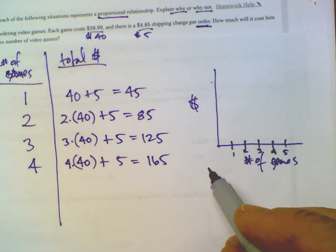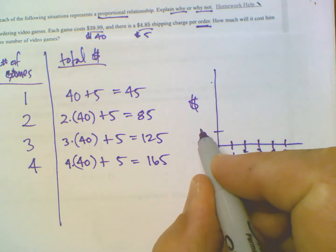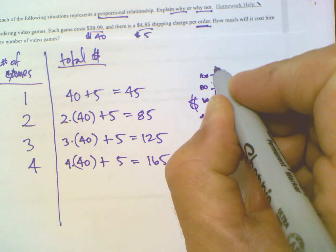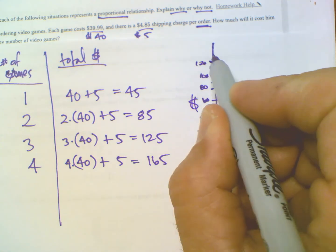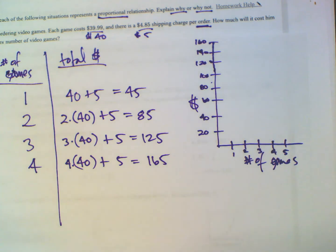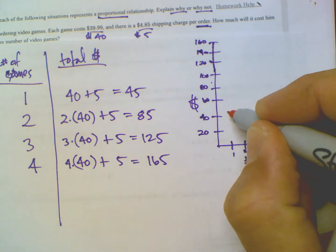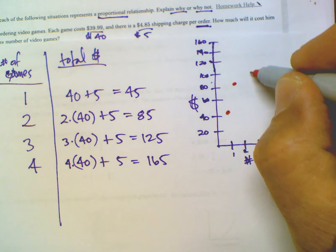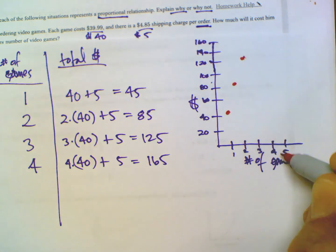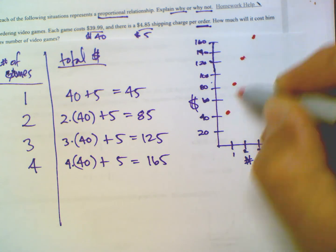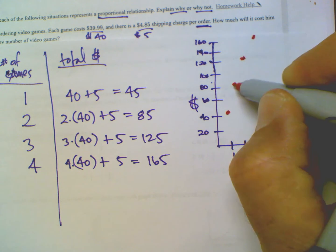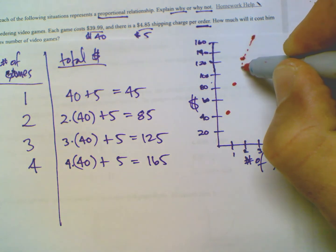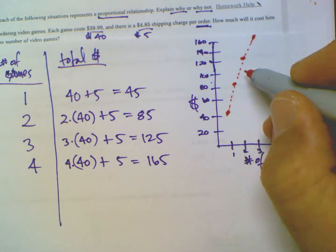But if I'm looking at this direction, I probably want to go maybe by twenties so I can fit it in here. 20, 40, 60, 80, 100, take it all the way up, 120, 140, 160. Okay. So let's just see what this looks like if I graph it. So at one game, it was 45, so I can put a little dot there approximately. Two games, it was 85, so I can put a little dot there. At three games, it was 125, so I can put a dot there. And then at four games, it's 165. So if I look at this, that does look linear, doesn't it? Might be off by my little dot way up there. But if I look at that and I see that's a linear pattern.